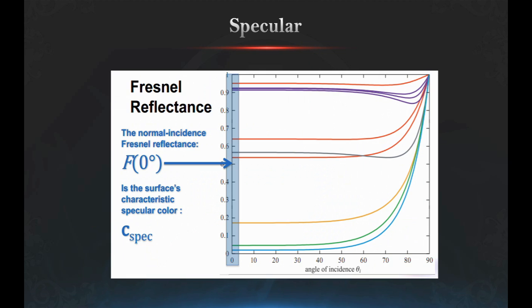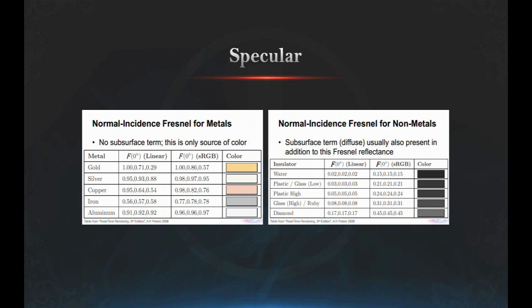Going on to specular: because metals are so bright, their specular contribution is super intense, which means they don't really rely on diffuse a lot, whereas dielectrics rely on diffuse a lot. But there's a catch — dielectrics rely on just float values for reflectivity because they reflect white light completely as it is, whereas metals absorb some wavelengths, which is why their specular reflection is colored.